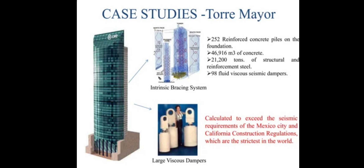Now, let's come to the case studies. The first case study is Torre Mayor in Mexico City. It used 252 reinforced concrete piles in the foundation, around 46,916 cubic meters of concrete, and 21,200 tons of structural and reinforced steel, along with 98 fluid viscous seismic dampers. This building exceeds the seismic requirements of Mexico City and California construction regulations, which are the strictest in the world.